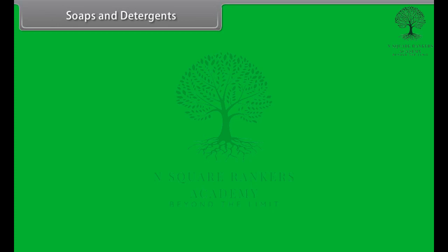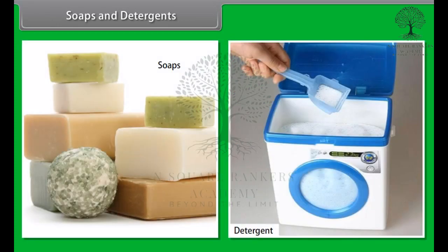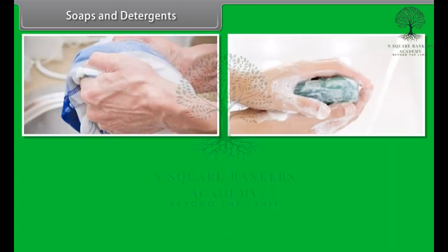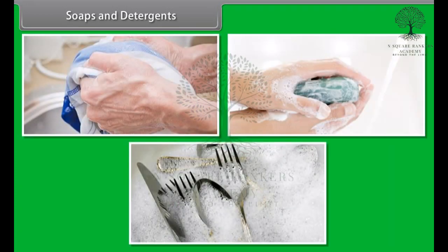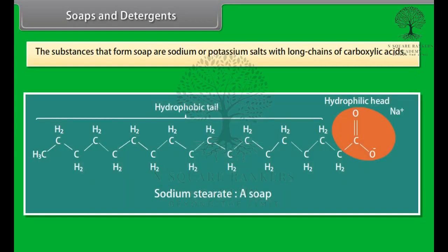Soaps and detergents. Soaps and detergents are used in our daily life to wash clothes, clean hands, clean utensils, etc. The substances that form soap are sodium or potassium salts with long chains of carboxylic acids.